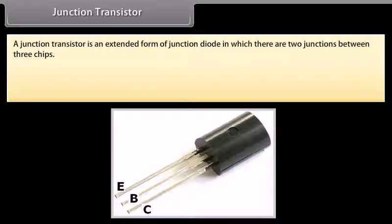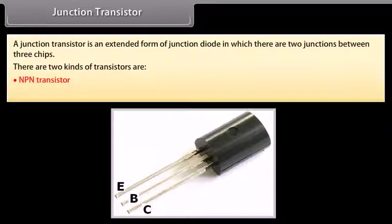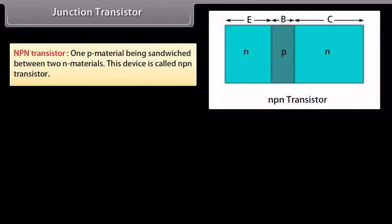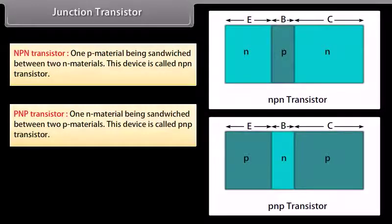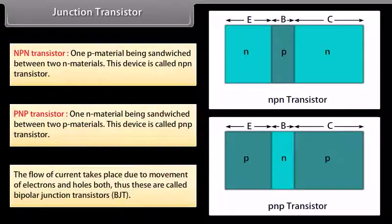Junction transistor: A junction transistor is an extended form of junction diode in which there are two junctions between three chips. There are two kinds of transistors: NPN transistor, where one P material is sandwiched between two N materials, and PNP transistor. The flow of current takes place due to movement of both electrons and holes, so these are called Bipolar Junction Transistors.